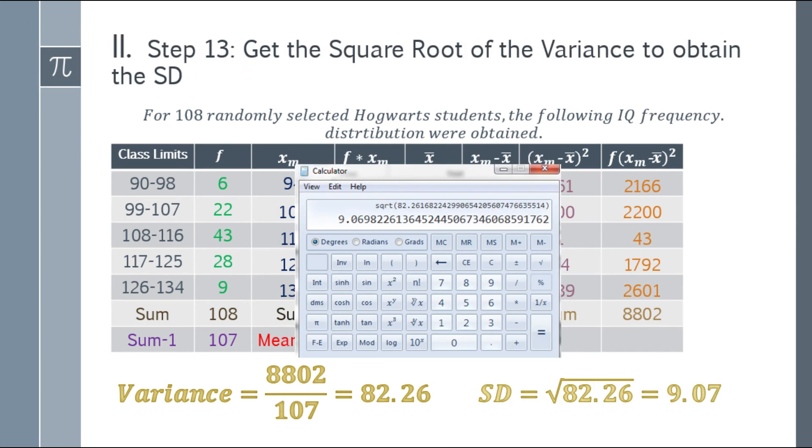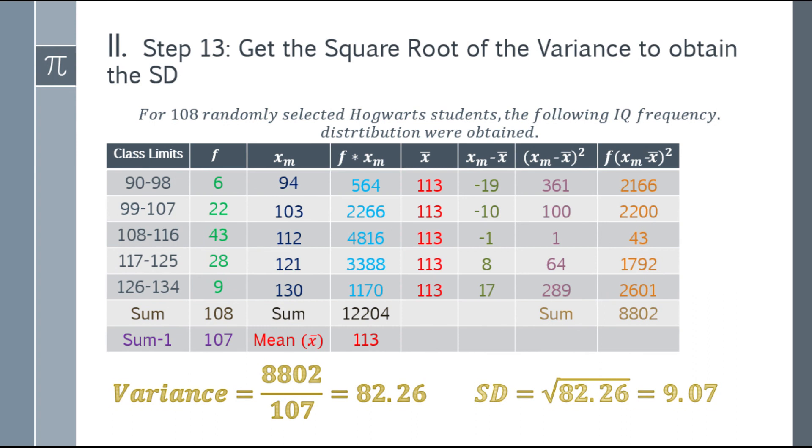How do we get the standard deviation? Go straight to your calculator with the variance answer. Take the square root directly, and you will get 9.0698 something. Round it up to 9.07. So here are your final answers: variance is 82.26 and standard deviation is 9.07.